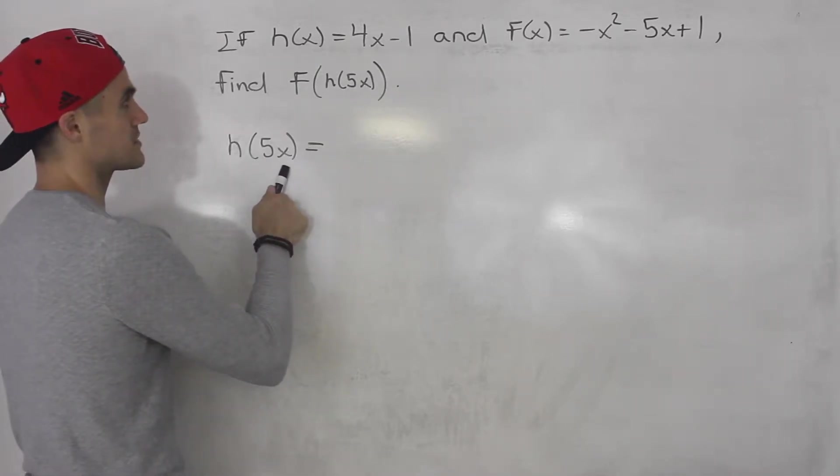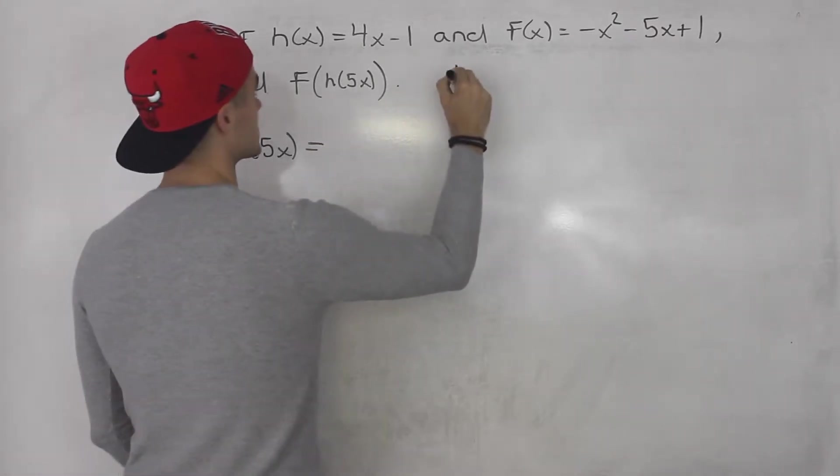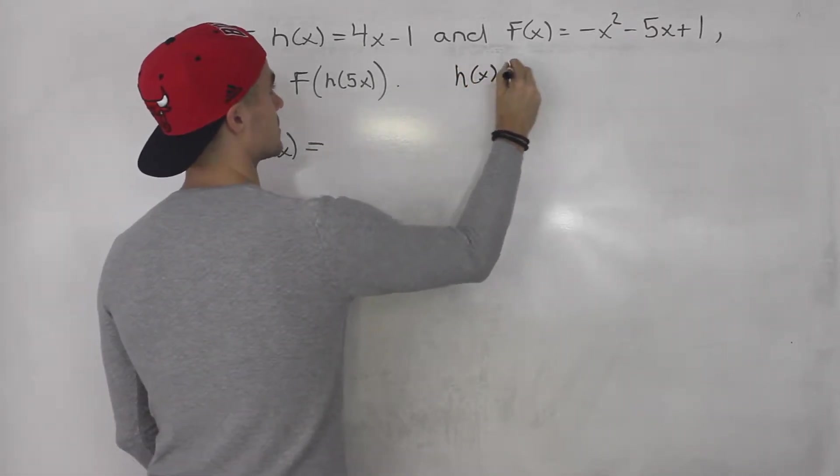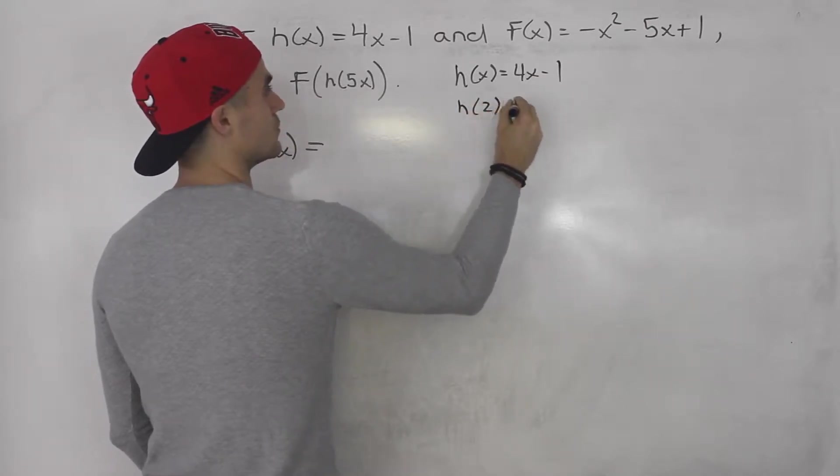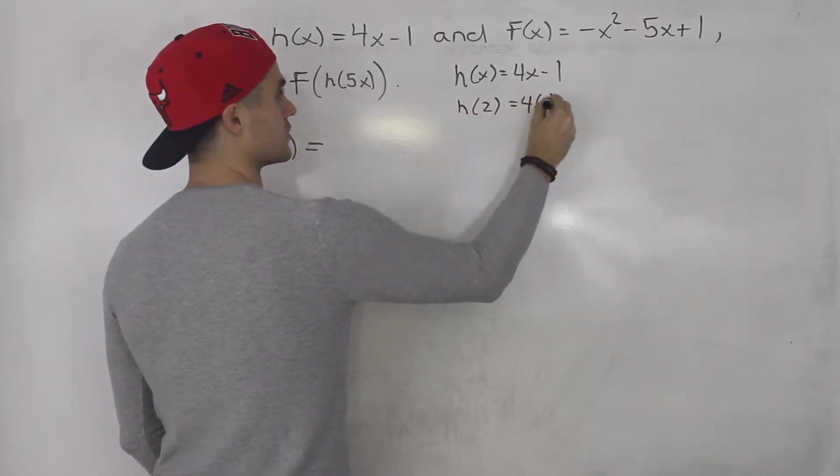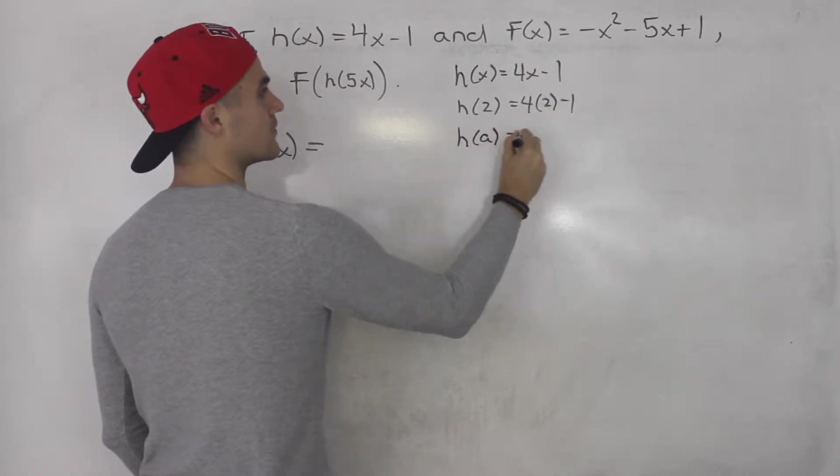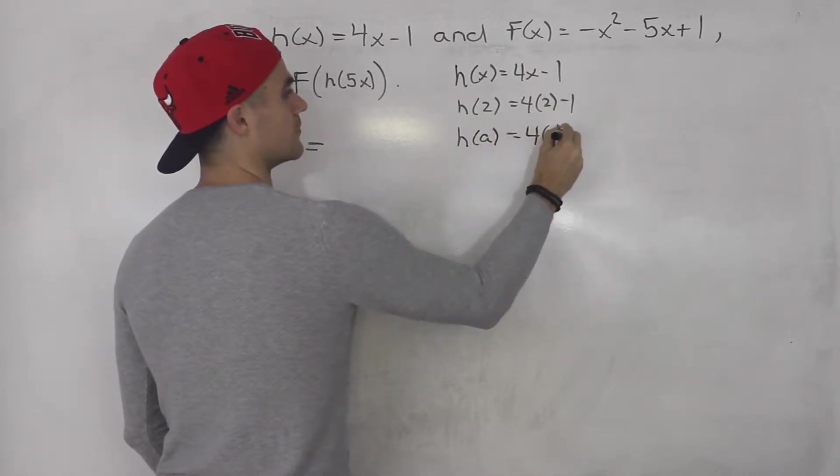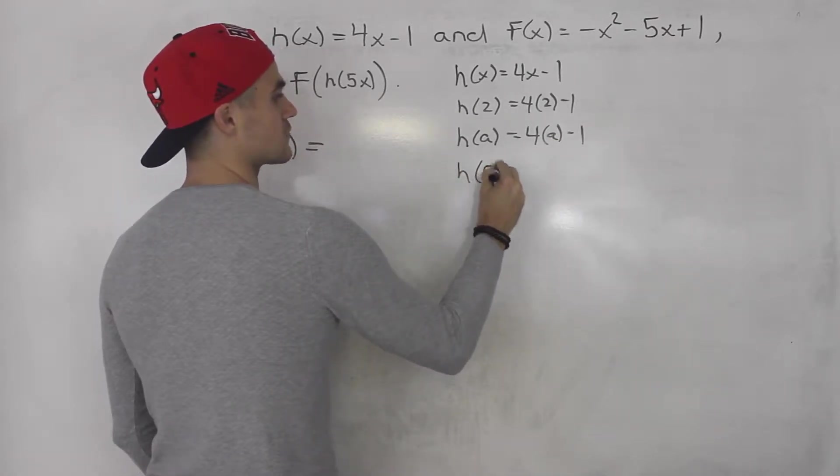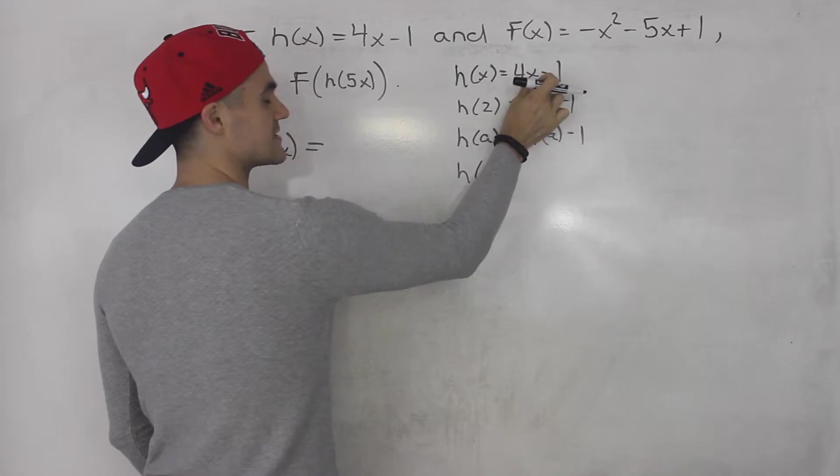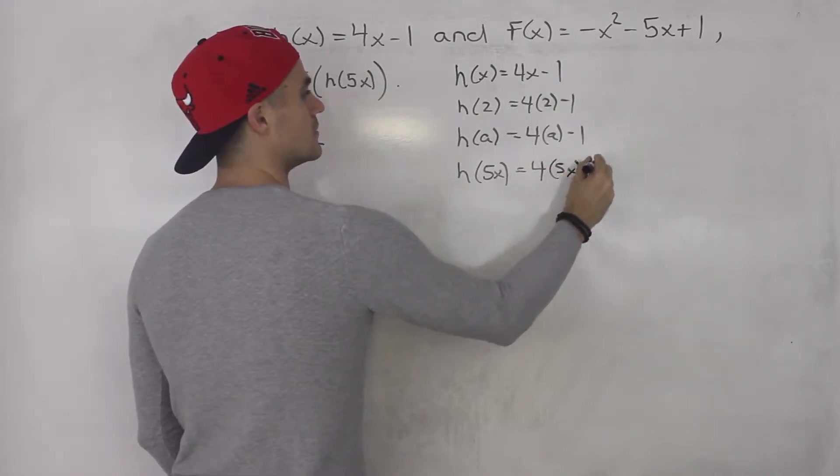So h(5x) is going to be what? Well, on the side here, we know h(x) equals 4x - 1. So what's h(2)? Well, it's going to be 4 times 2 minus 1. We're plugging in 2 for the x. What's h(a) going to be? Well, it's going to be 4a - 1.